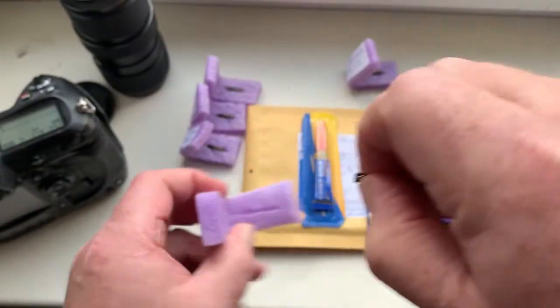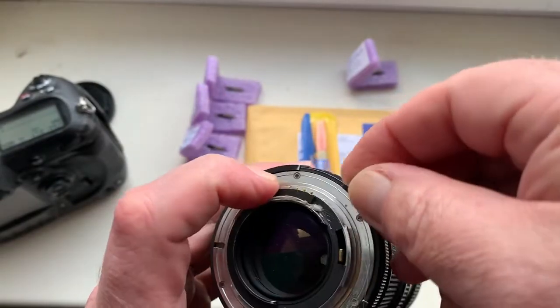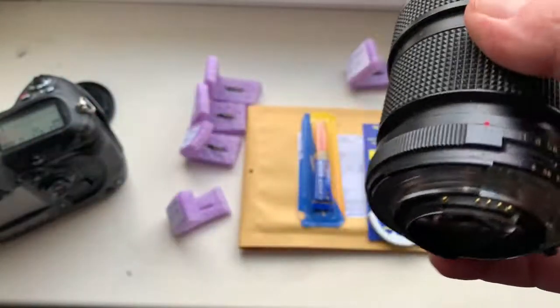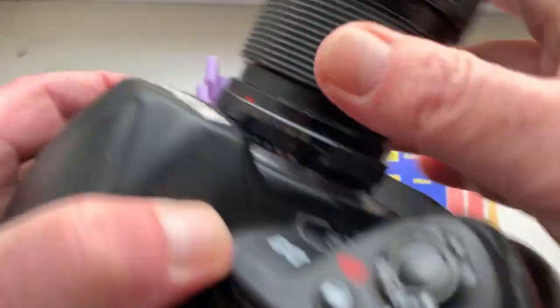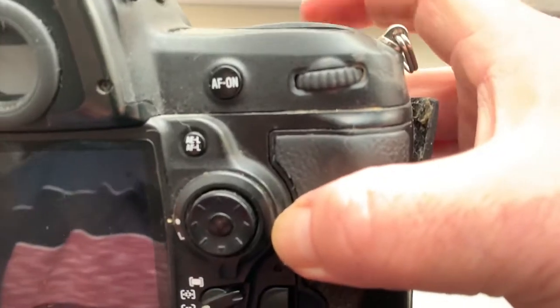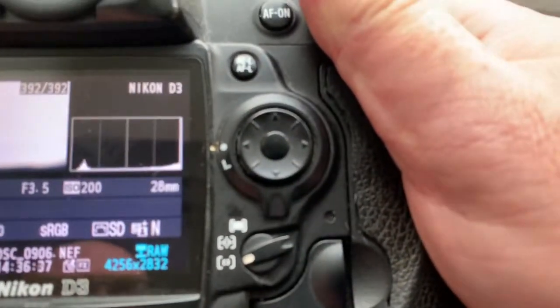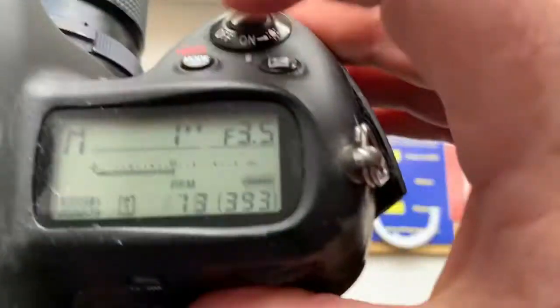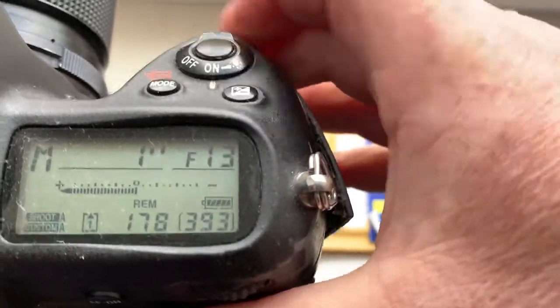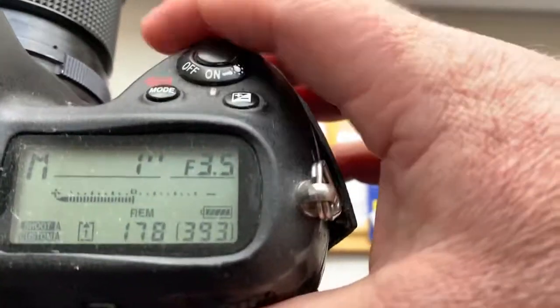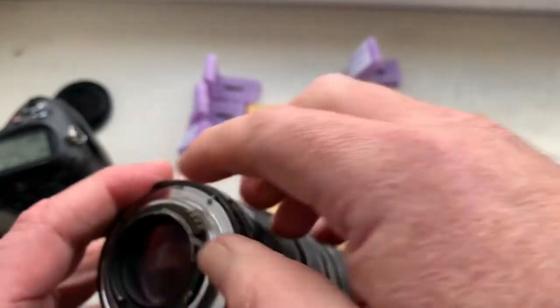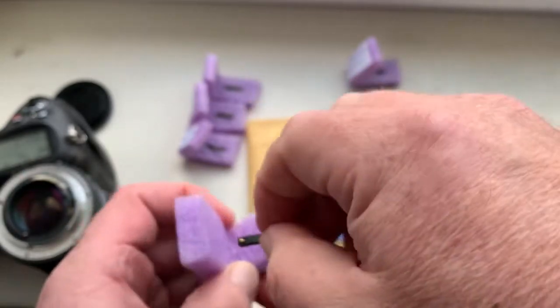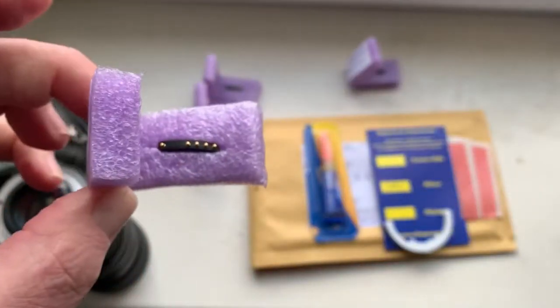Chip number two. Focal lens is 28mm, aperture range from 3.5 to 16. The chip number two.